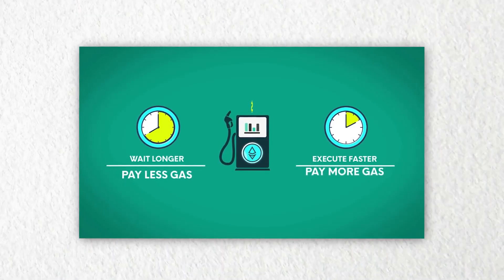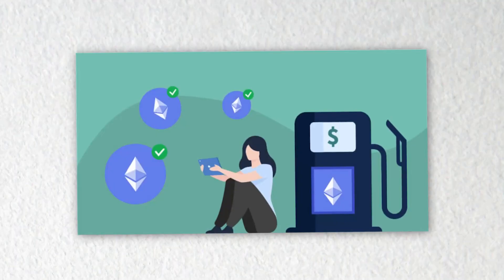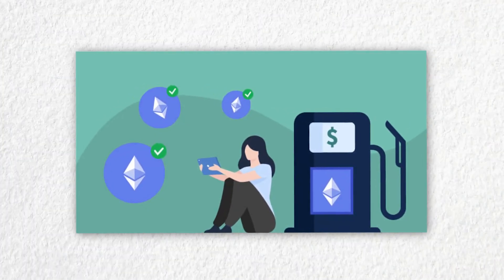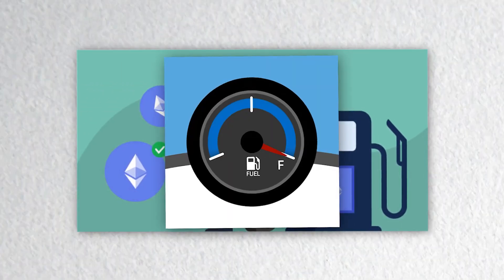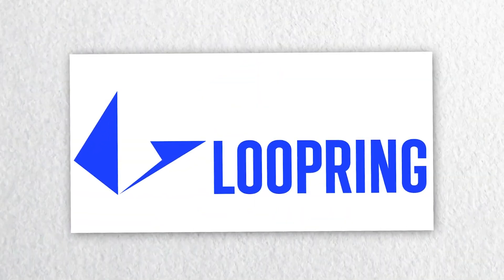Another way to save on gas fees is to use Layer 2 scaling solutions. These are protocols that sit on top of the Ethereum blockchain and help to offload some of the computational work, thereby reducing the amount of gas required to execute transactions. Some popular Layer 2 solutions include Arbitrum, Loopring and Didix.